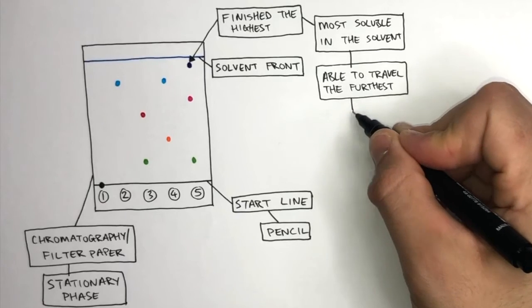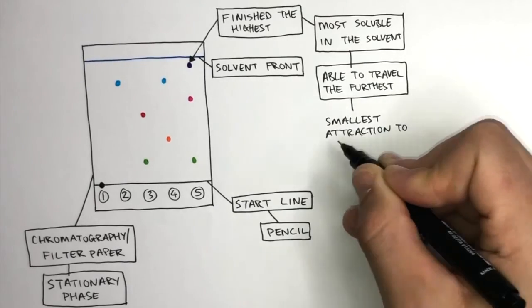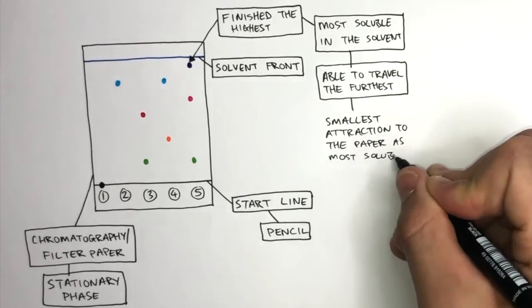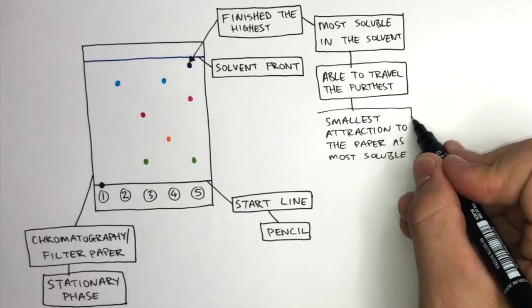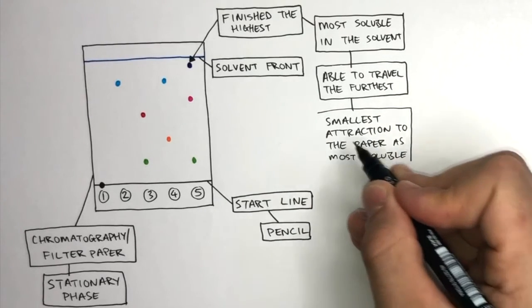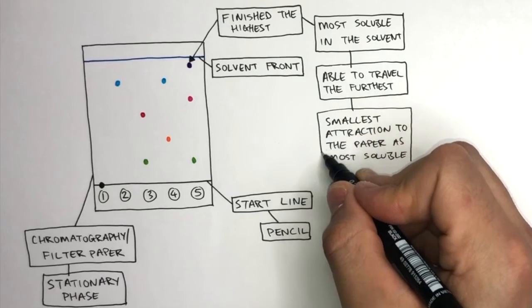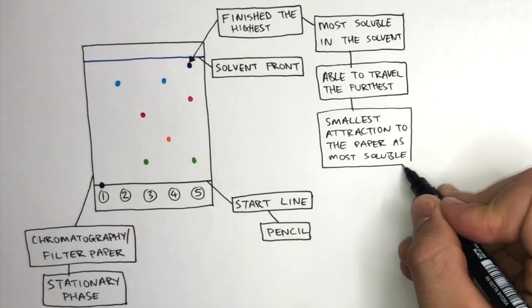This is due to it having the smallest attraction to the paper as it is the most soluble. The more soluble a solute is in that solvent, the further it can travel with the solvent as it will be less attracted to the paper.